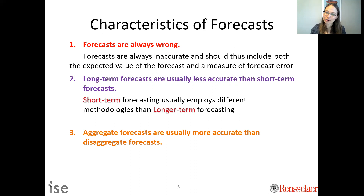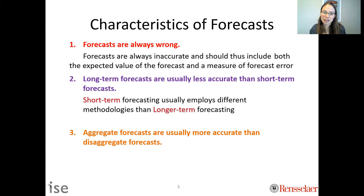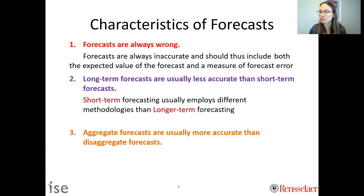The third characteristic is that aggregate forecasts are usually more accurate than disaggregate forecasts. If you forecast things jointly, variability can cancel out — if one is up and the other is down, they offset each other in a way you don't benefit from when forecasting individually. Pooling resources, including forecasting at the aggregate level, yields more accuracy than at the disaggregate level. This insight recurs throughout the class.